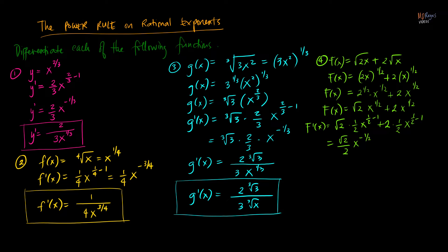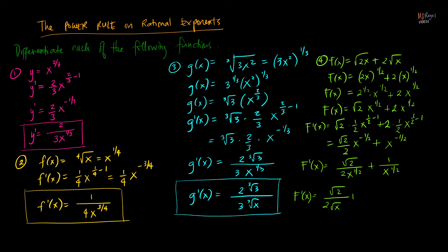Since we don't want negative exponents in our final answer, we rewrite: square root of 2 over 2x raised to one-half plus 1 over x raised to one-half. In radical form, the derivative equals square root of 2 over two square root of x plus 1 over square root of x. You can also take the LCD, which is two square root of x, giving square root of 2 plus 2 all over two square root of x. This is the derivative of the function.